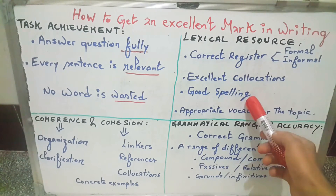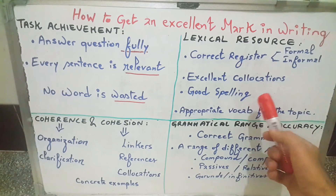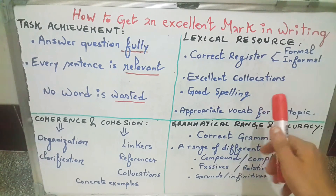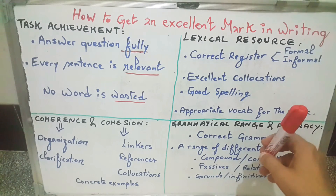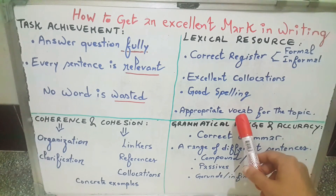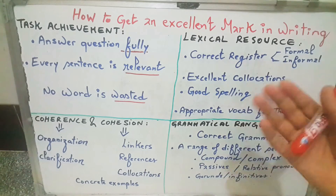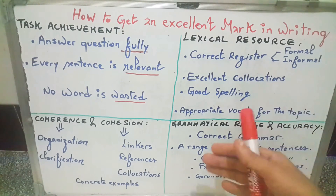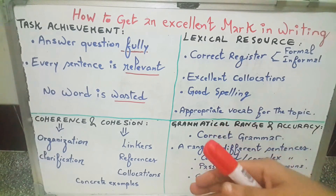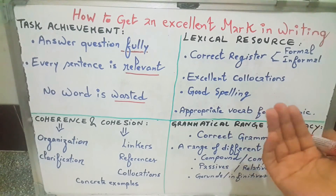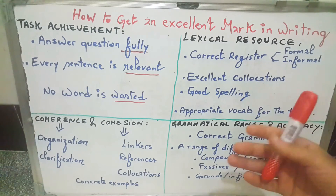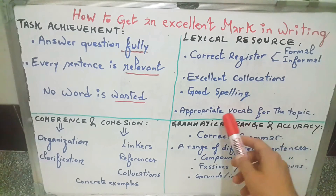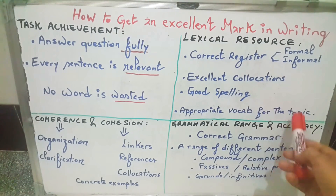Also, try to be careful with spelling — don't make too many mistakes because it will bring your mark down. If you are writing about the environment, you will need a lot of environment words; if you are writing about business, you will need business words. This means you need to read books with different themes and contents, so the vocabulary should be appropriate to the topic.